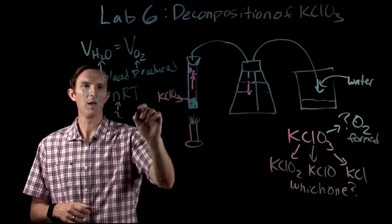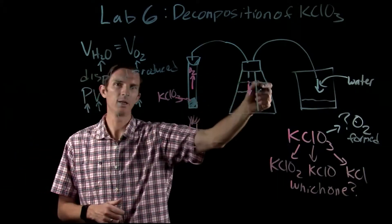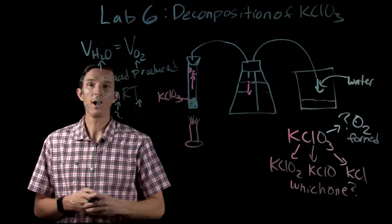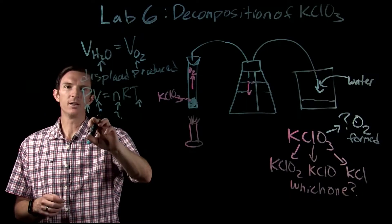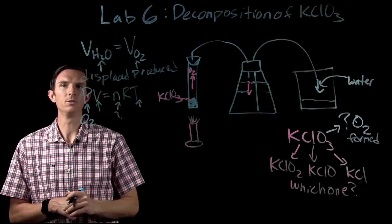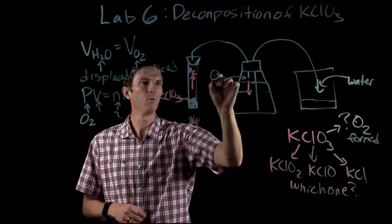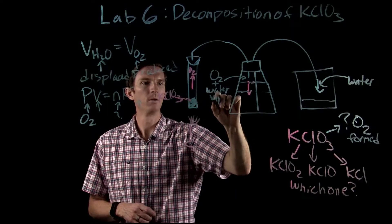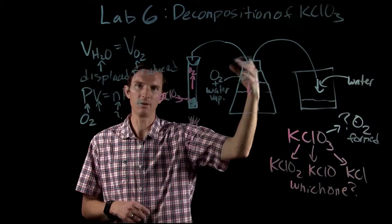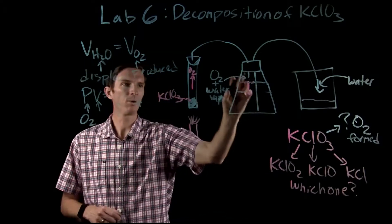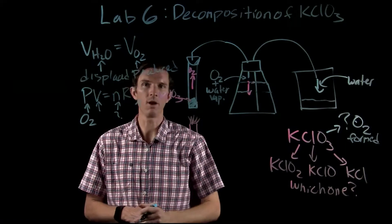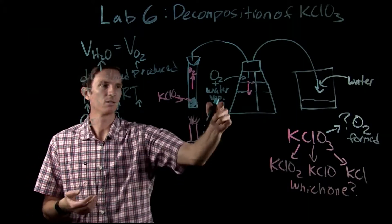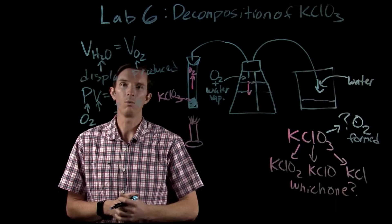Our goal is to figure out how many moles of oxygen are formed. We need to know our pressure and our temperature. Temperature is straightforward — we take a thermometer, measure the temperature of the water, and assume that's the temperature of the oxygen above it. The tricky part is the pressure, because we want just the pressure of the O2. Inside the container we have O2, but we also have water vapor sitting above the water, and there's always vapor given off by a liquid. So the pressure inside contains both oxygen and water vapor.